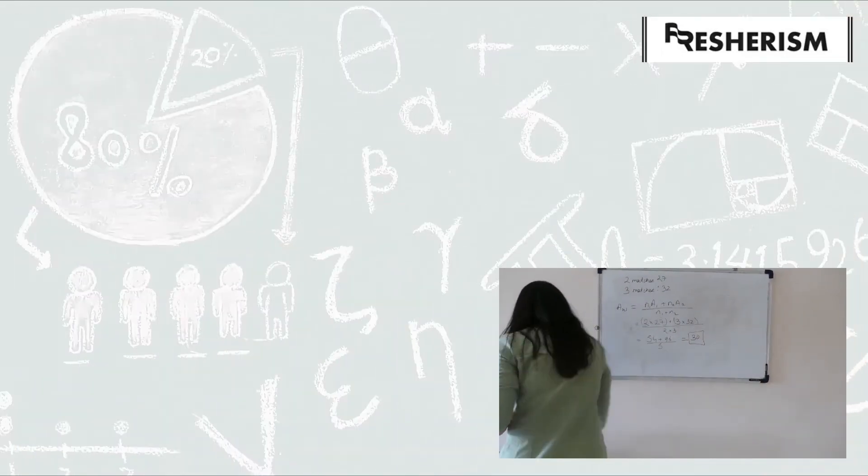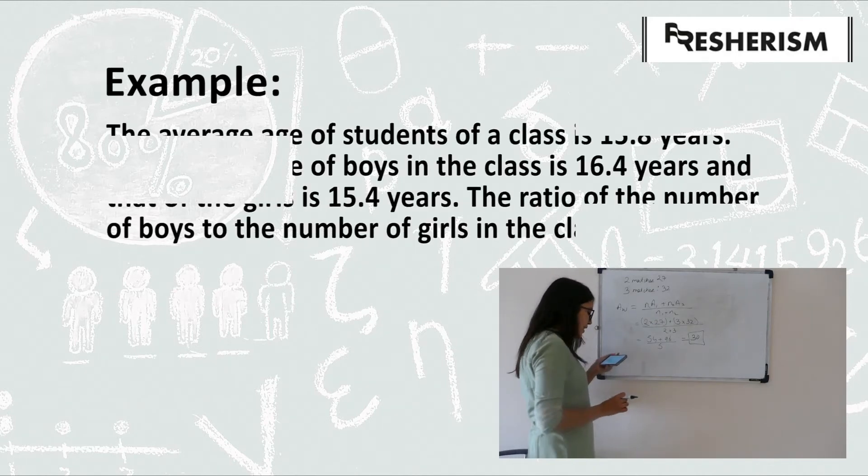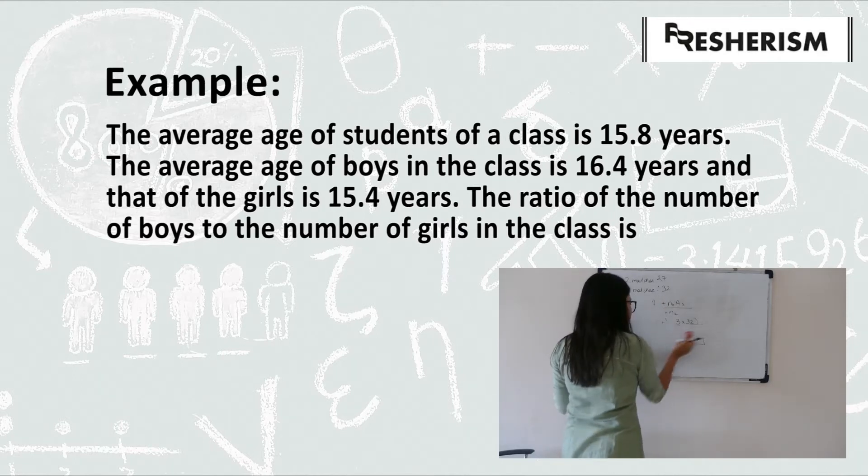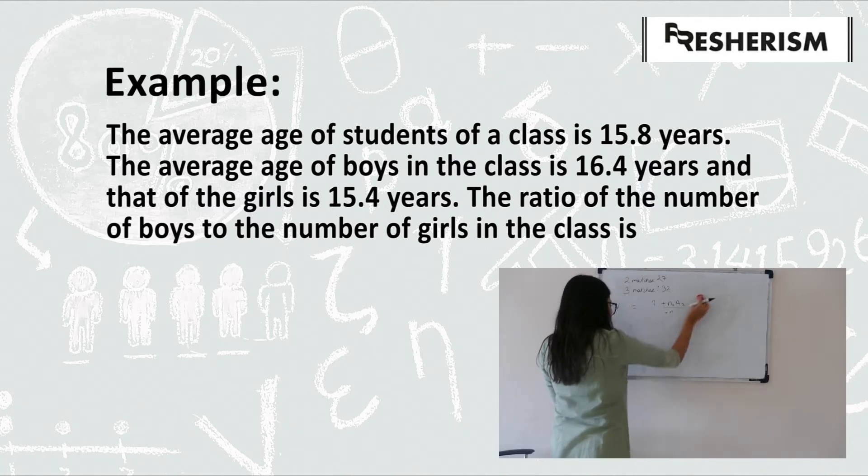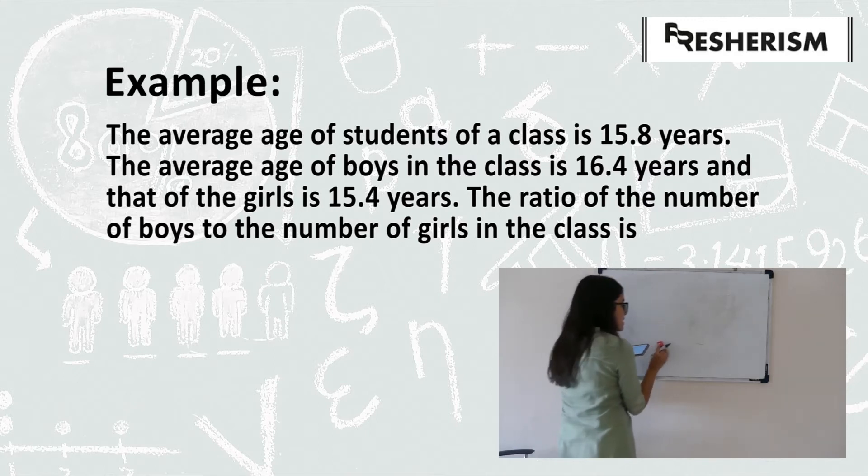Let us now look at another example. The example on your screen reads: The average age of students of a class is 15.8 years. The average age of boys in the class is 16.4 years, and that of girls is 15.4 years.